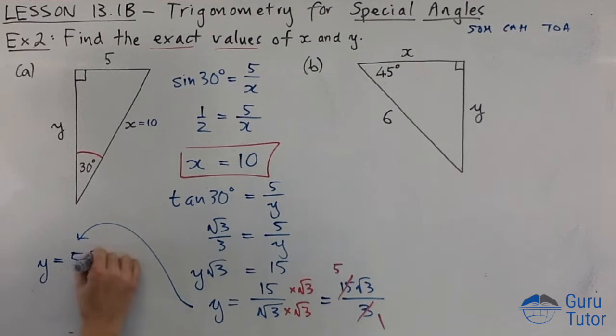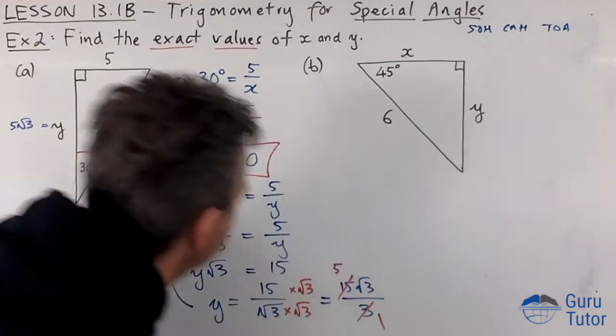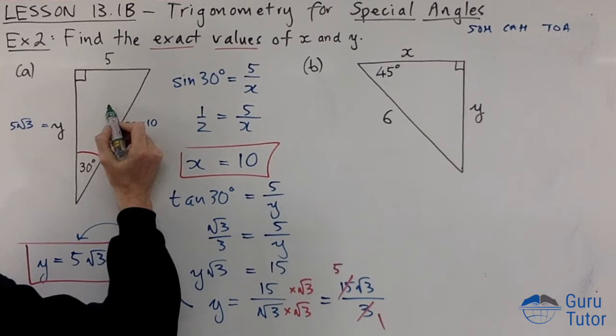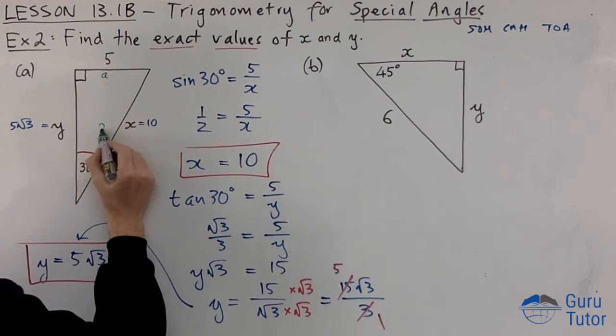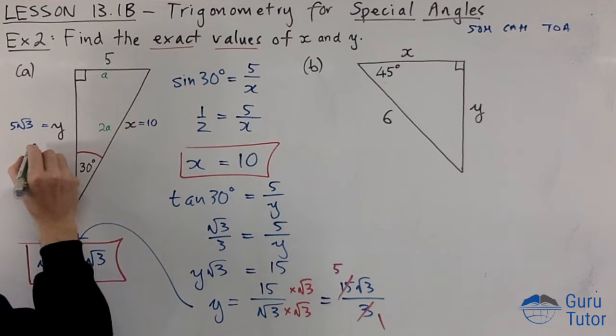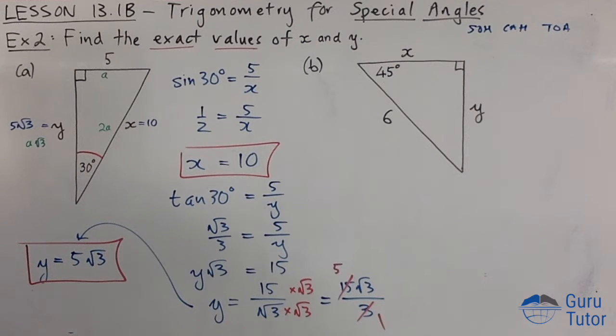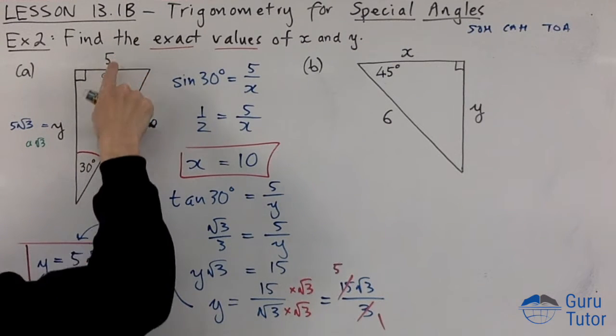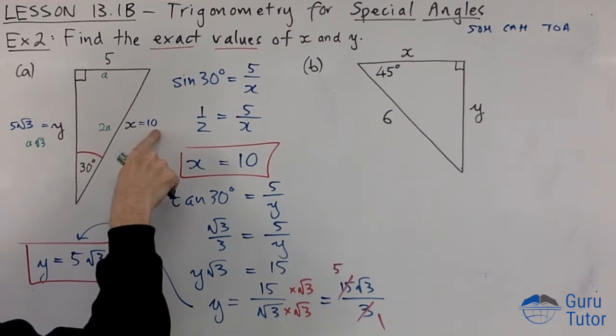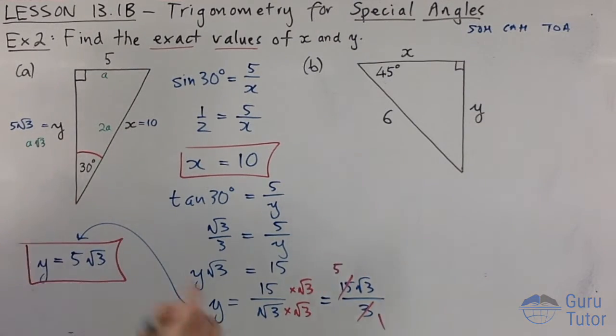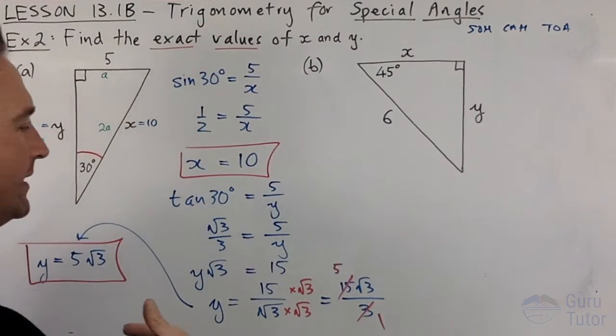That is y is 5 root 3. That's the first one done. And remember in geometry we had that formula - that's always 2a and this is a root 3. What's a here? Obviously a is 5, so if a is 5, what's 2 times 5? 10, that agrees. And if a is 5, we've got 5 root 3, which agrees. So let's forget about that one.